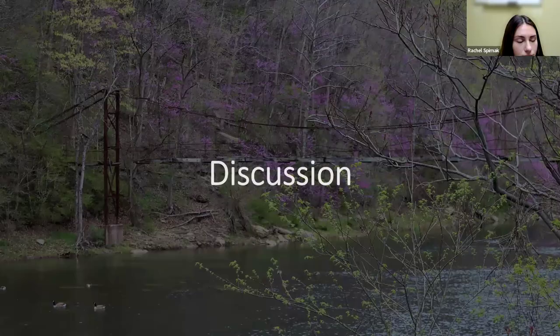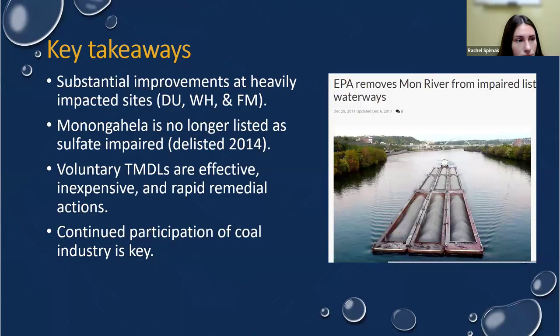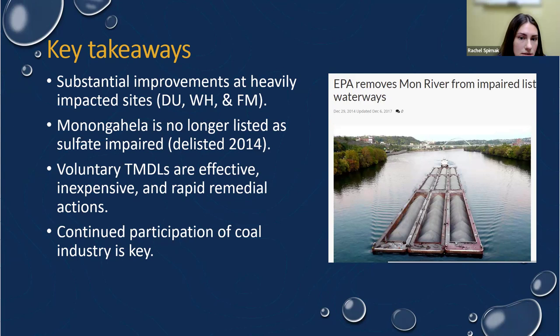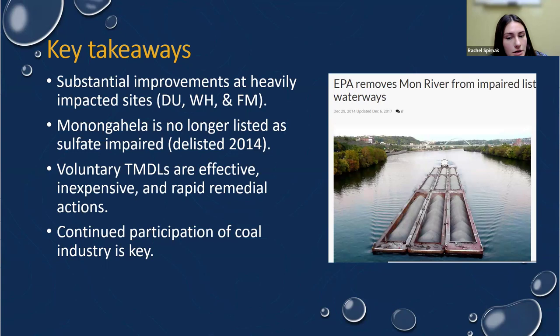Key takeaways: we saw substantial improvements at some heavily impacted sites, including Dunkard Creek, Whiteley Creek, and Flaggy Meadows Run. TDS and sulfate concentrations within the Mon River proper haven't exceeded the standards since implementation of the VDMP, and the river was delisted for sulfate in 2014 — with our data used to help with the delisting. This confirms that voluntary TMDLs are effective, inexpensive, and rapid remedial actions, and serves as justification for the importance of continuing this program and encouraging voluntary participation of the coal industry.